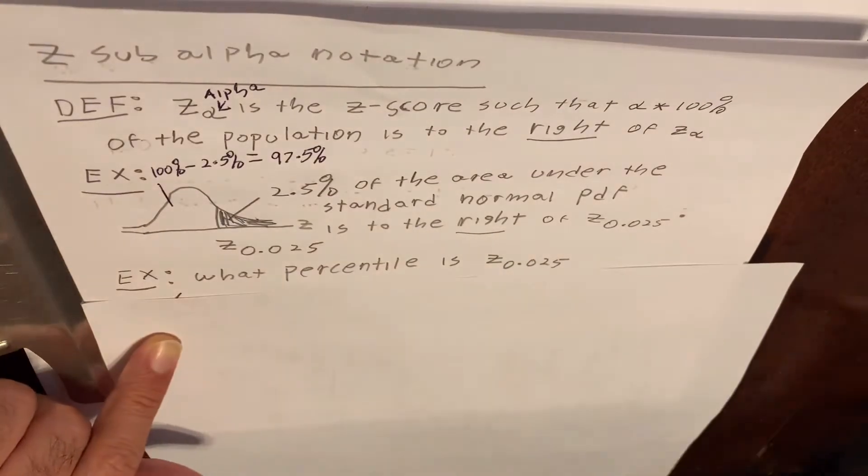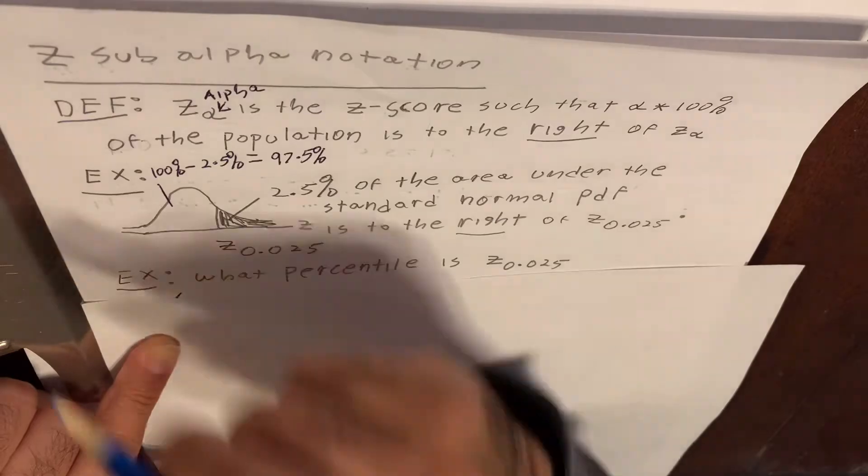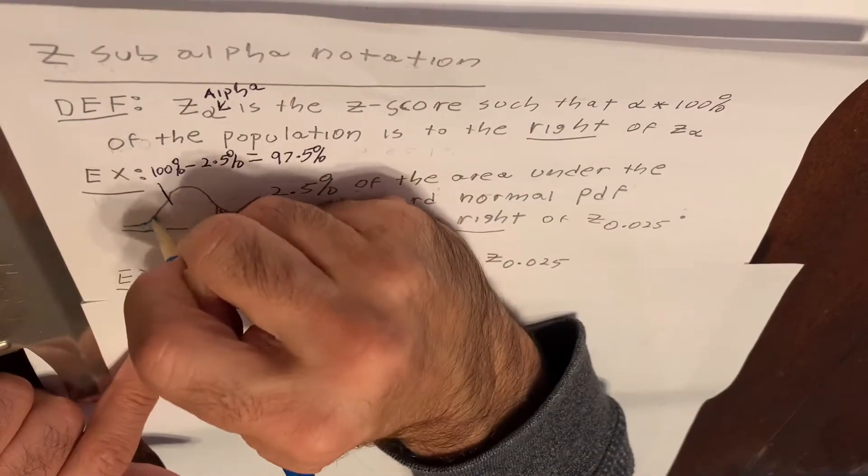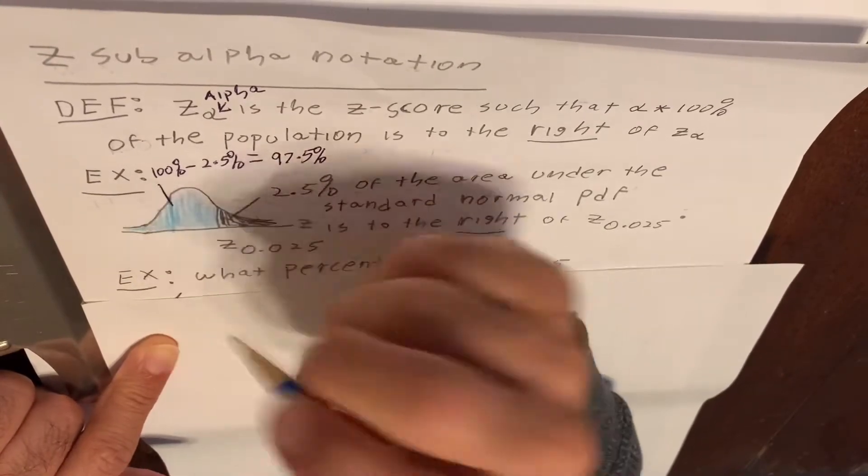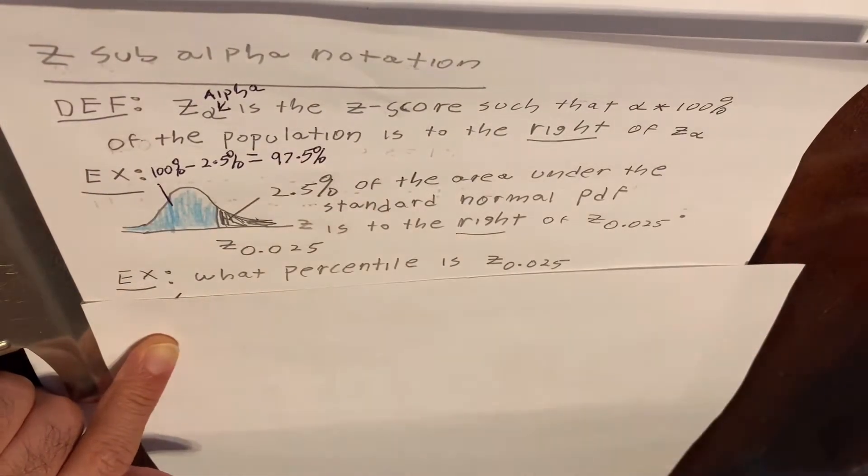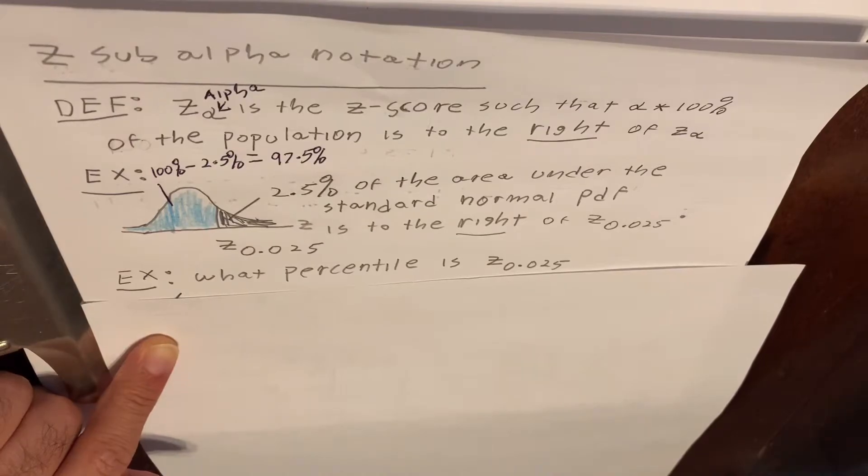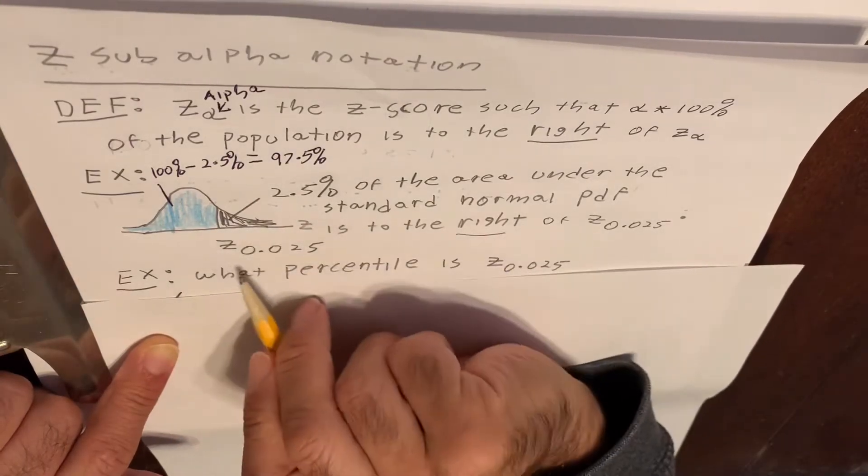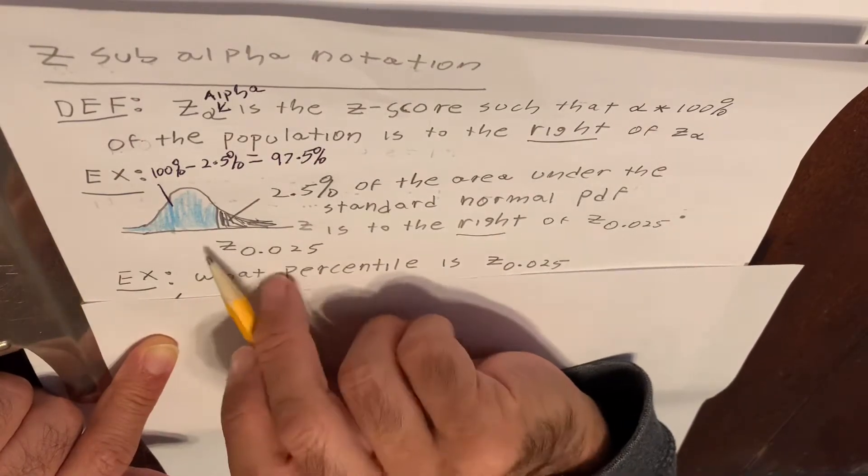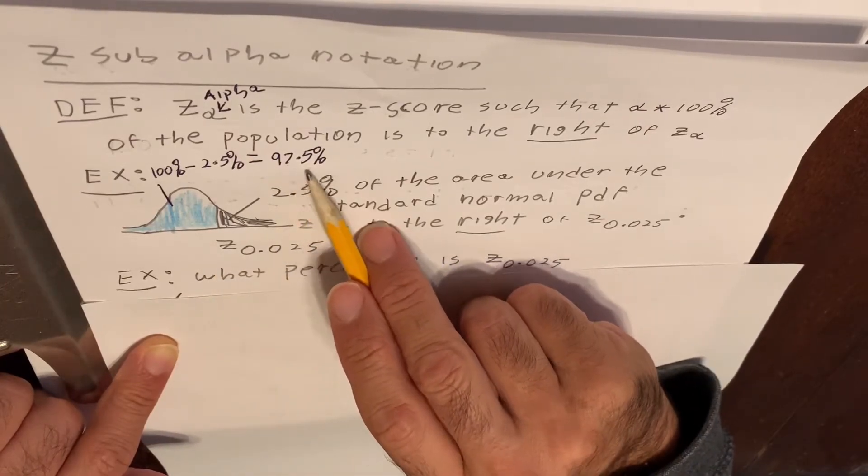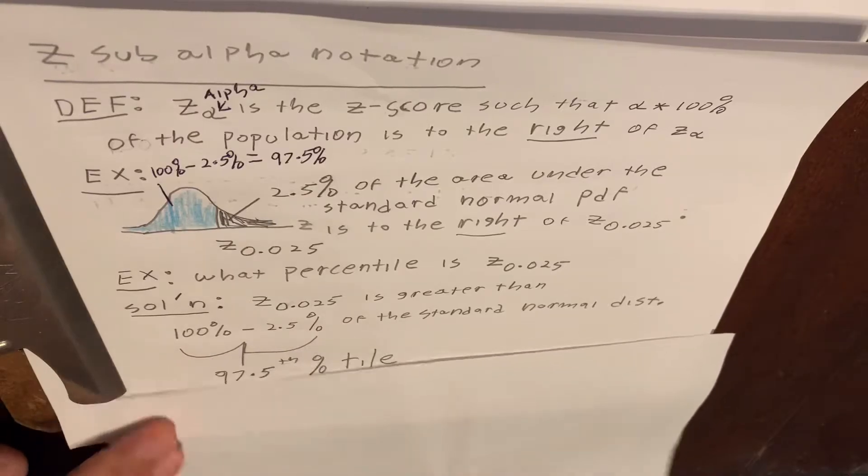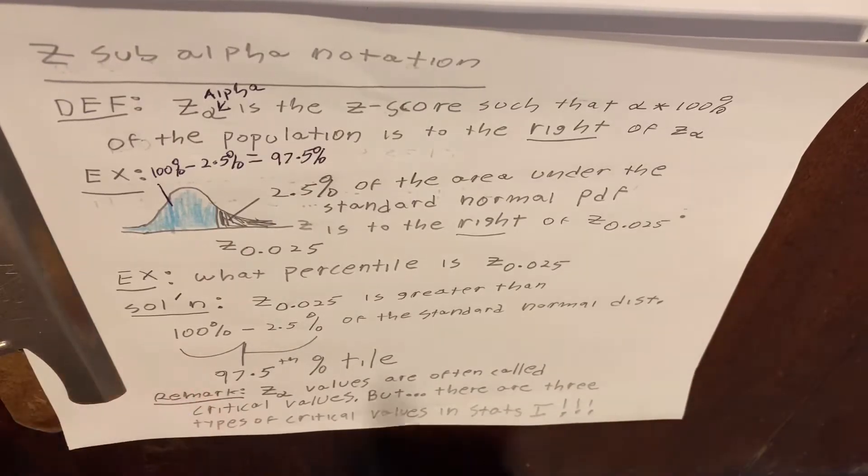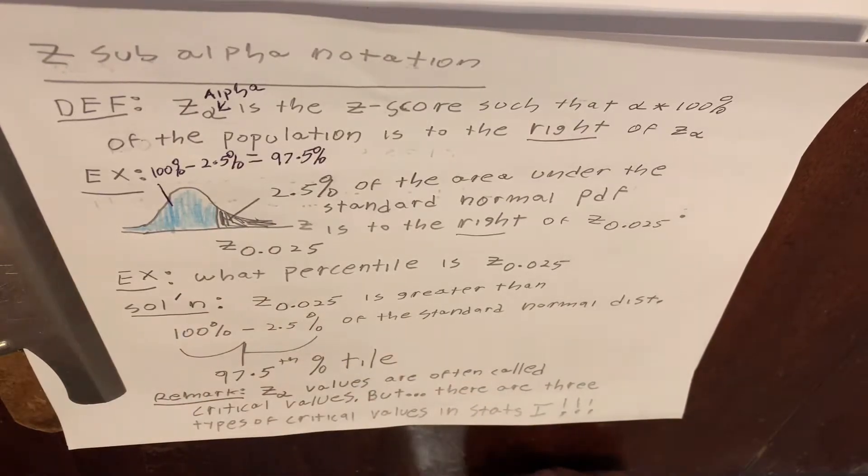This area over here, to the left of this Z score, shaded in light blue, is 97.5% of the area. So that means that this Z score is actually the 97.5% percentile. That's the idea here.